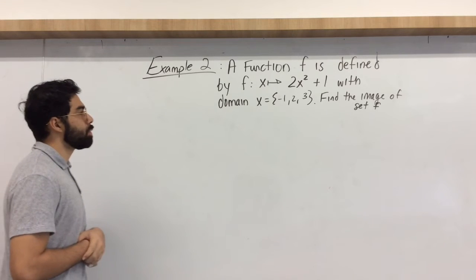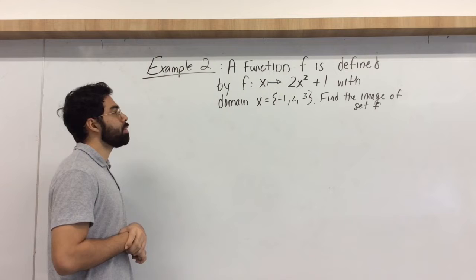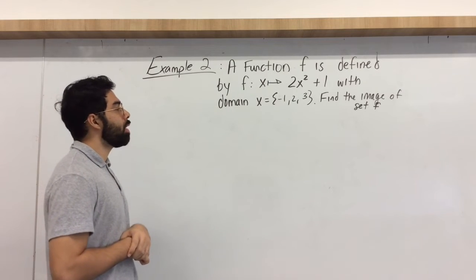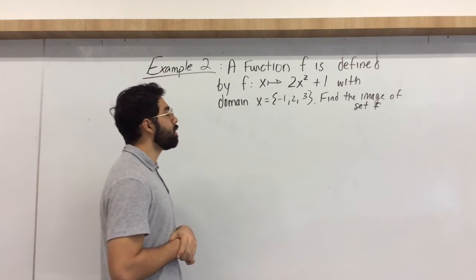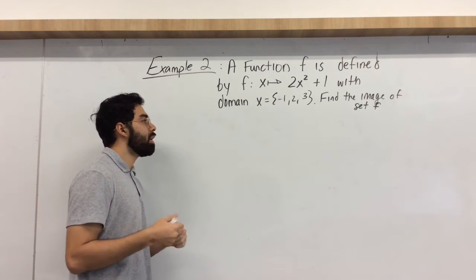All right, example 2. Example 2 says the function f is defined by f, where x is not 2, 2x squared plus 1, and the domain where the domain is negative 1, 2, and 3. Find the image of your output of set f.